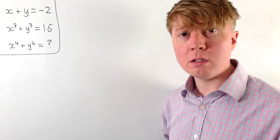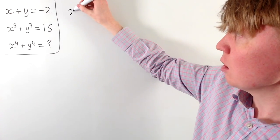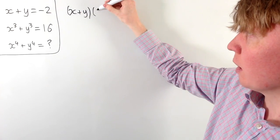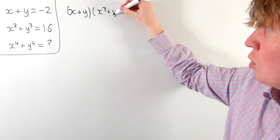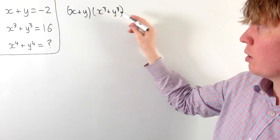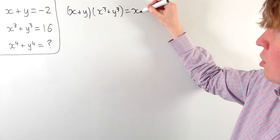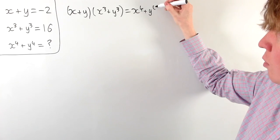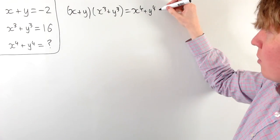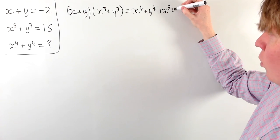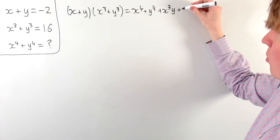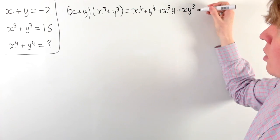To get us started, one thing we can notice is that if we were to multiply x plus y by x cubed plus y cubed, we would get x to the 4 plus y to the 4 as one of our terms. But then we would also have x cubed times y, so plus x cubed y, and also x times y cubed, so plus x y cubed.